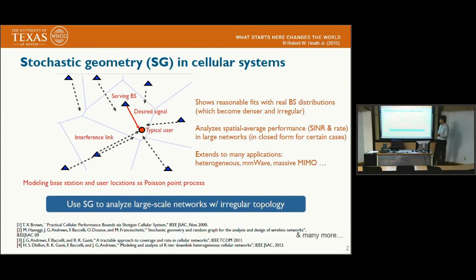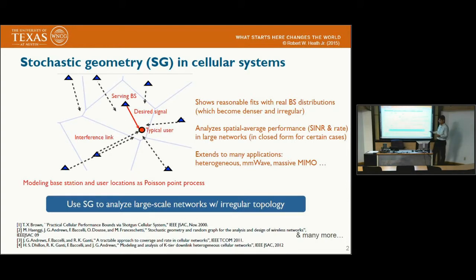Stochastic geometry has been applied to analyze different networks, like heterogeneous networks, millimeter-wave networks, and massive MIMO networks. Here today, we will use stochastic geometry to analyze the performance of uplink massive MIMO networks.